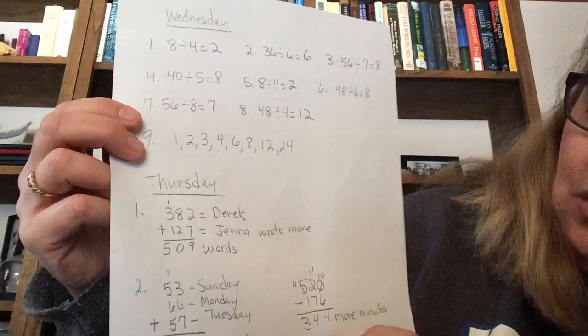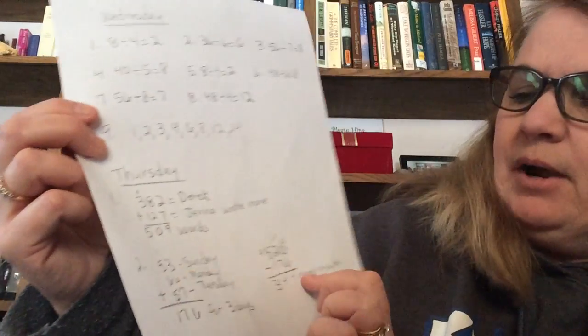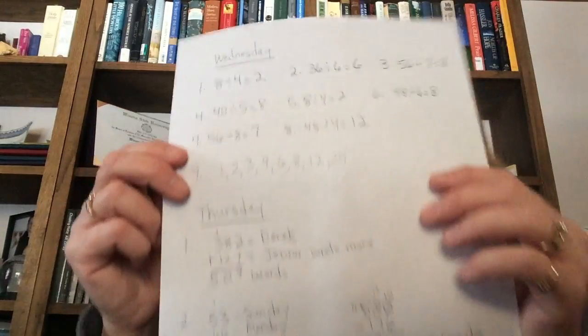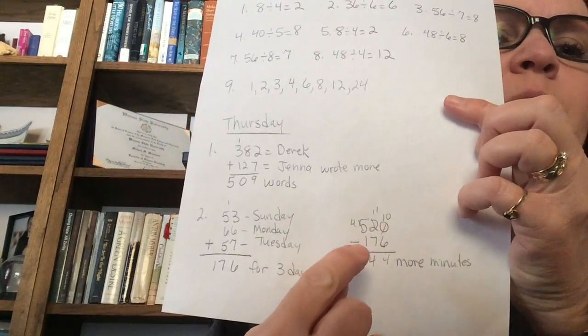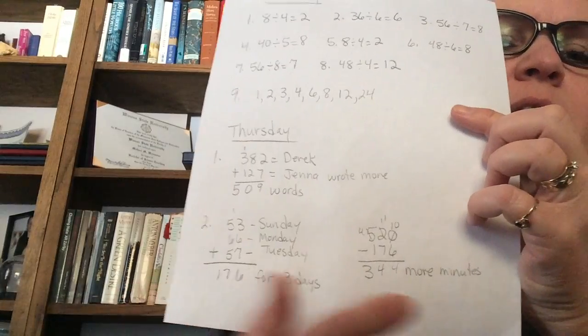And then you had to figure out for the total week, so 344 more minutes she would have to practice if she had to practice 520. So you took the number of the total that she had to practice minus the amount of days she had already practiced to get how many more she needed to practice.